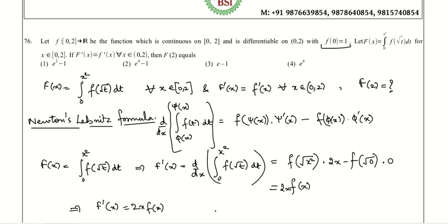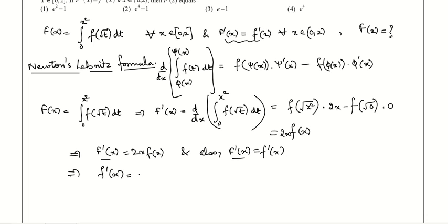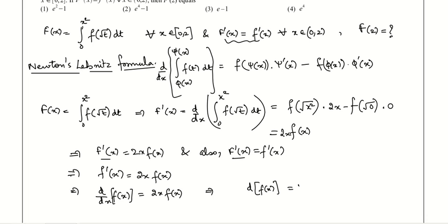Now, we are also given that F'(x) = f'(x) for all x in (0,2). Comparing both sides, since the left-hand sides are the same, we can equate: f'(x) = 2x·f(x). The left-hand side can be written as d/dx of f(x) by definition, so d[f(x)]/dx = 2x·f(x).